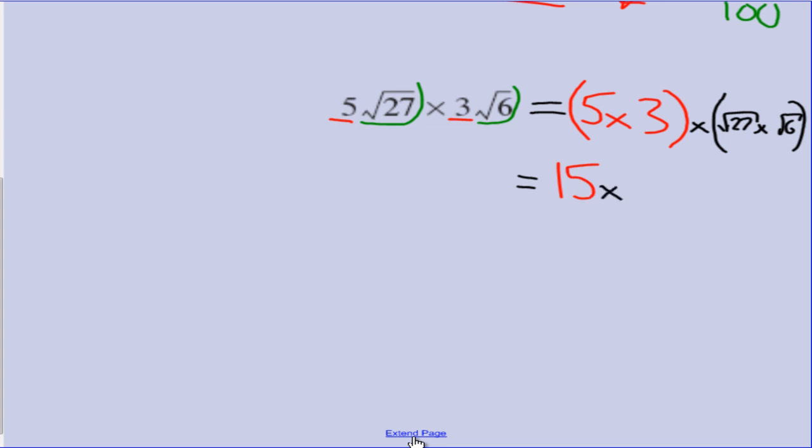The square root of 27 times the square root of 6. We're going to join those together under the one square root sign. So we're going to have 27 times 6. Next one. We have the 15 stays a 15, and the square root, instead of 27 times 6, we're going to have 162.